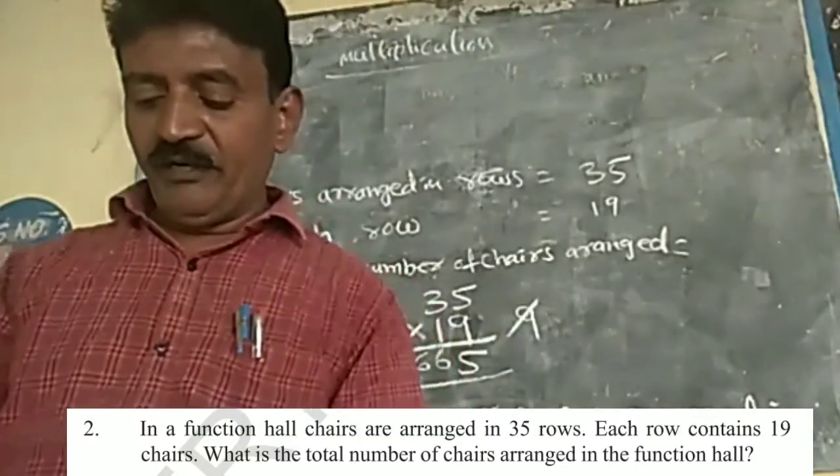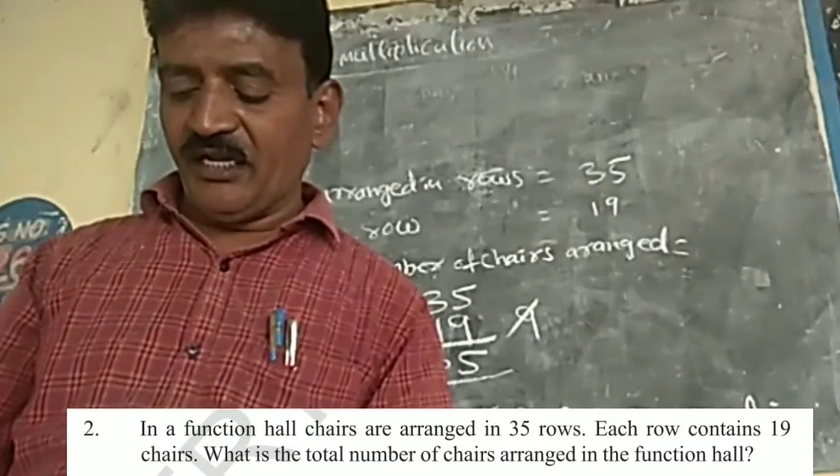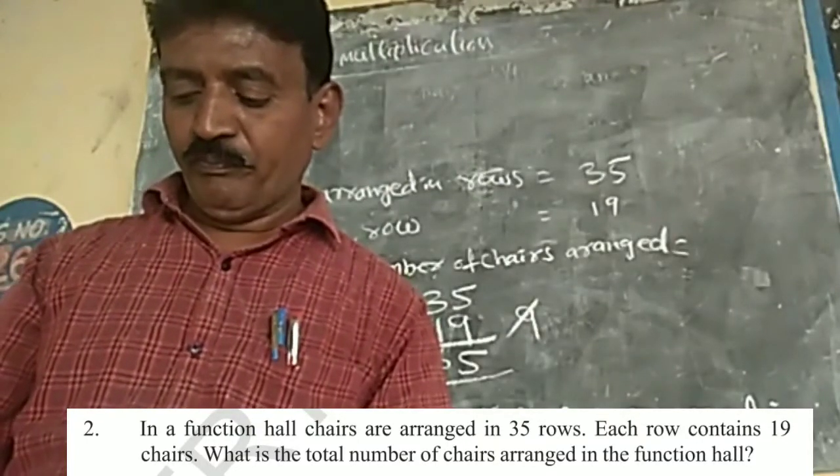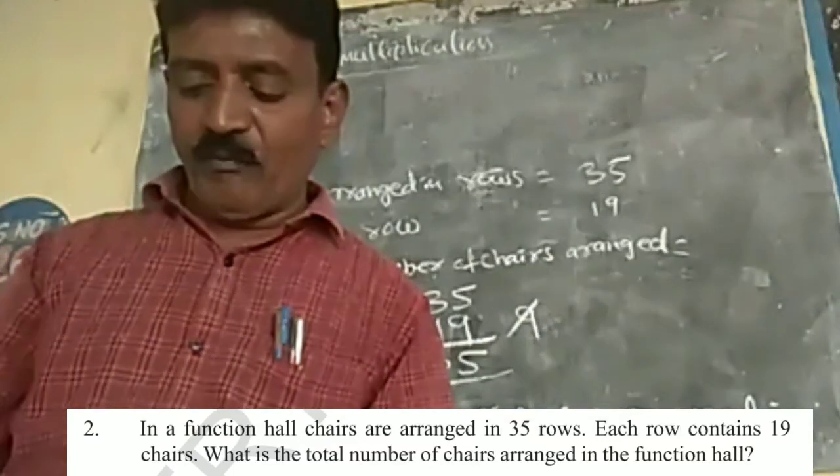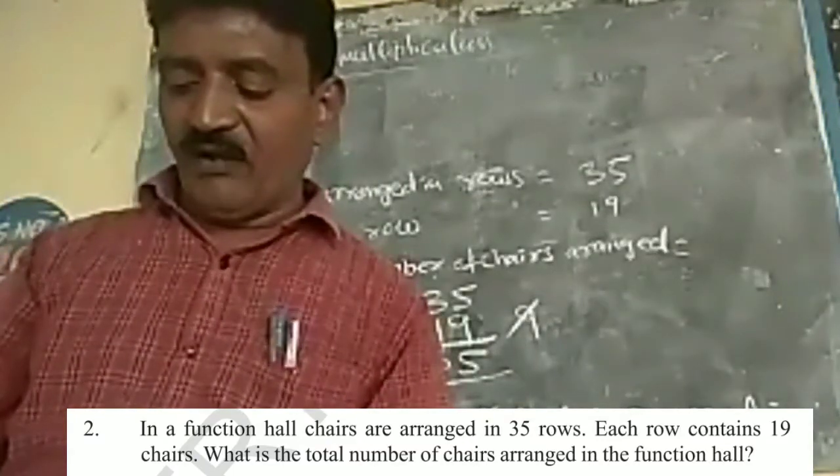Question is e. In a function hall, chairs are arranged in 35 rows. Each row contains 19 chairs. What is the total number of chairs arranged in the function hall?